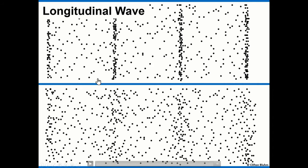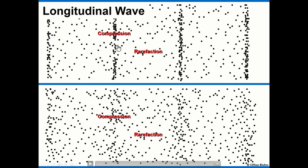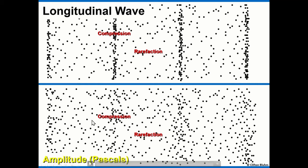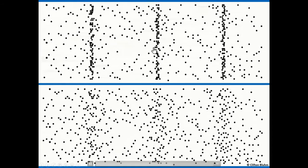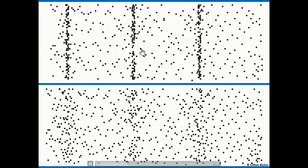This animation shows how amplitude is related to longitudinal waves. If these are individual air molecules, we can see some areas have compressions and other areas have rarefactions. This area is very compressed — if this is a wave moving through air, this would be a loud sound with lots of energy. This would be a fainter, softer sound with less energy. The amplitude measures the energy of that wave in pascals. The wave is moving from left to right, but the individual molecules are just moving back and forth along the direction of the wave — a longitudinal wave.